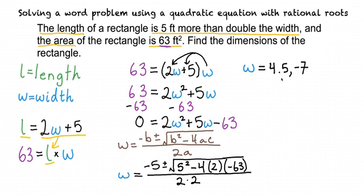You're right. Both of these numbers are solutions to this. However, our question is asking about the width of a rectangle, and we can't really have a negative width for a rectangle, so negative 7 is not the solution in the context of our problem. Therefore, we know that W equals 4.5.